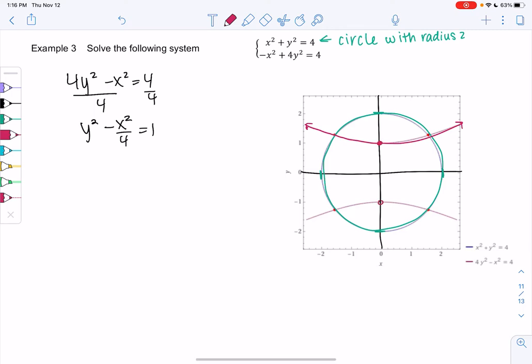So you'll see my vertices are at 1 and negative 1 because y is over 1. And we get a hyperbola. So I'm expecting 4 solutions.